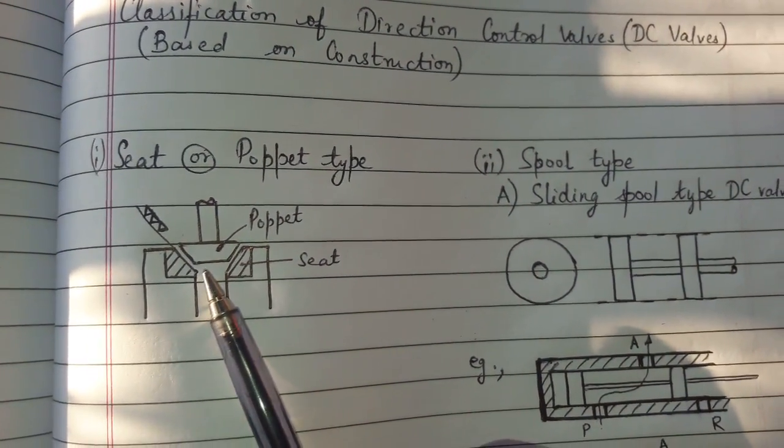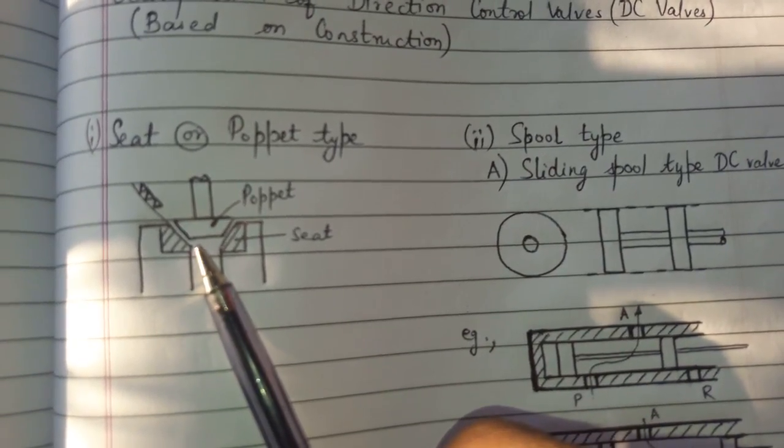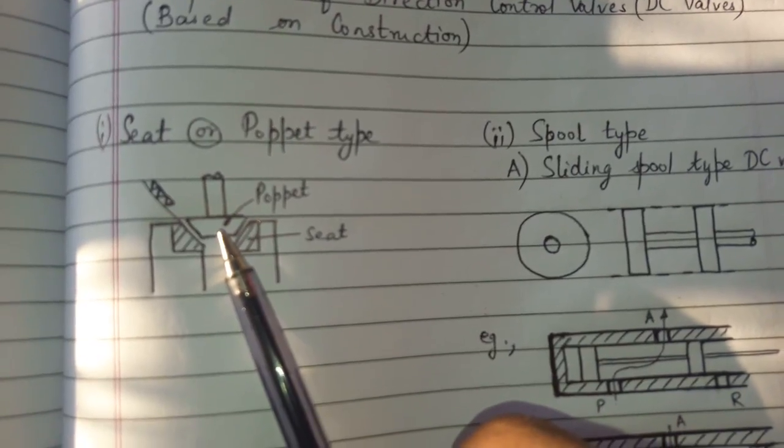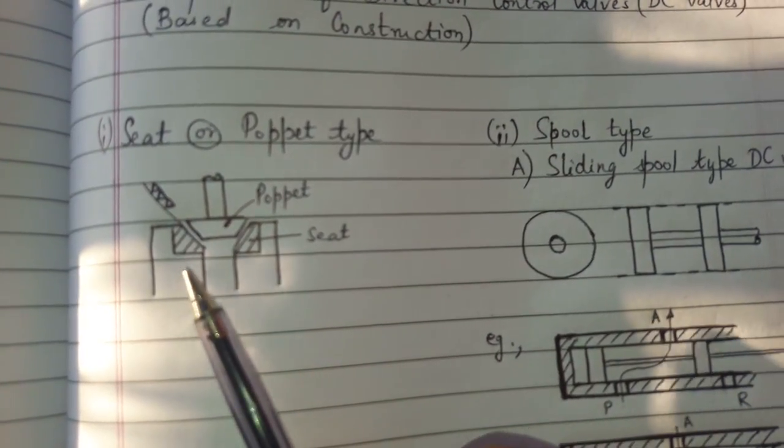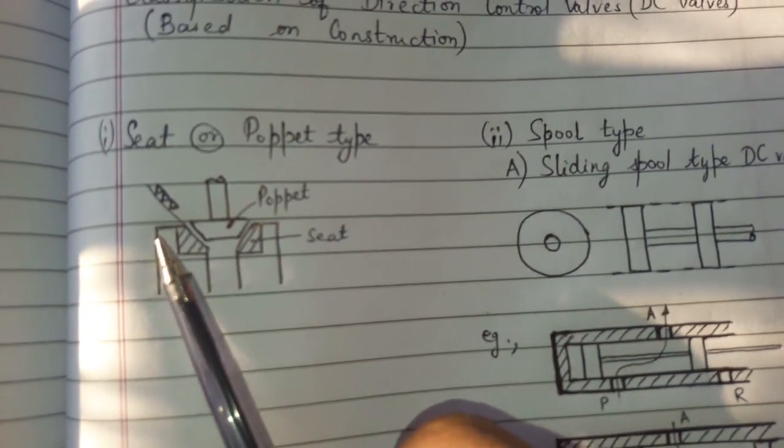Let us discuss seat or puppet type DC valve. In this valve a puppet or ball or a plate or a cone is made to sit on a specially constructed finely machined and polished seat.